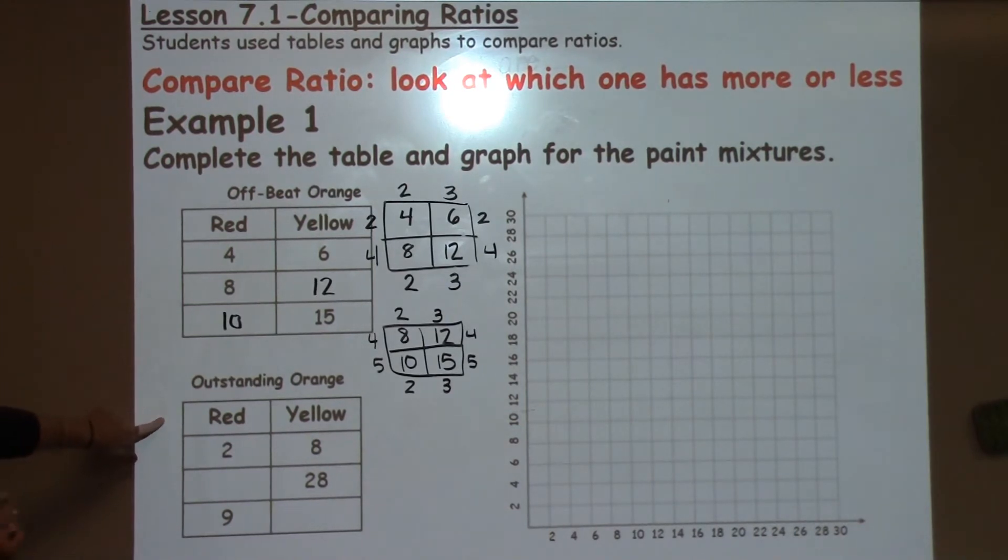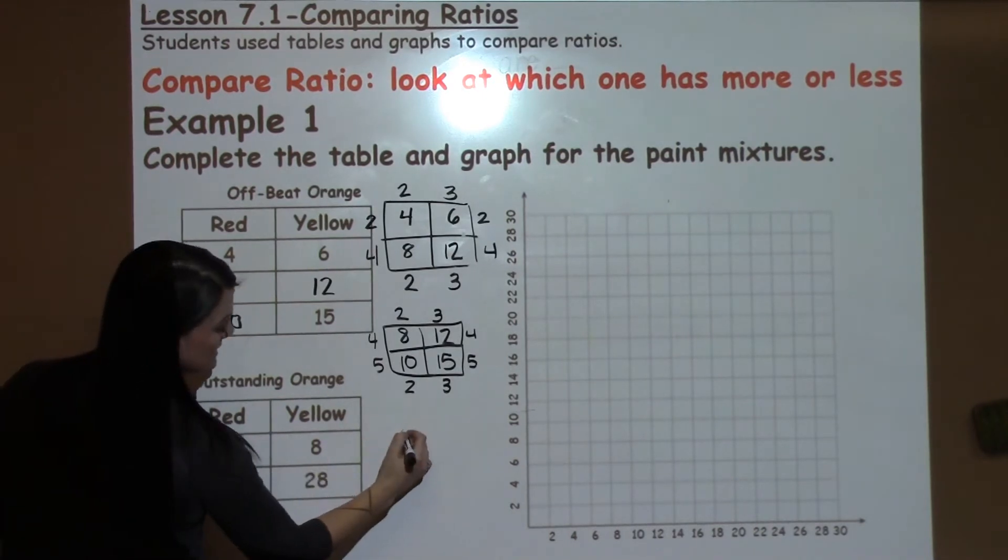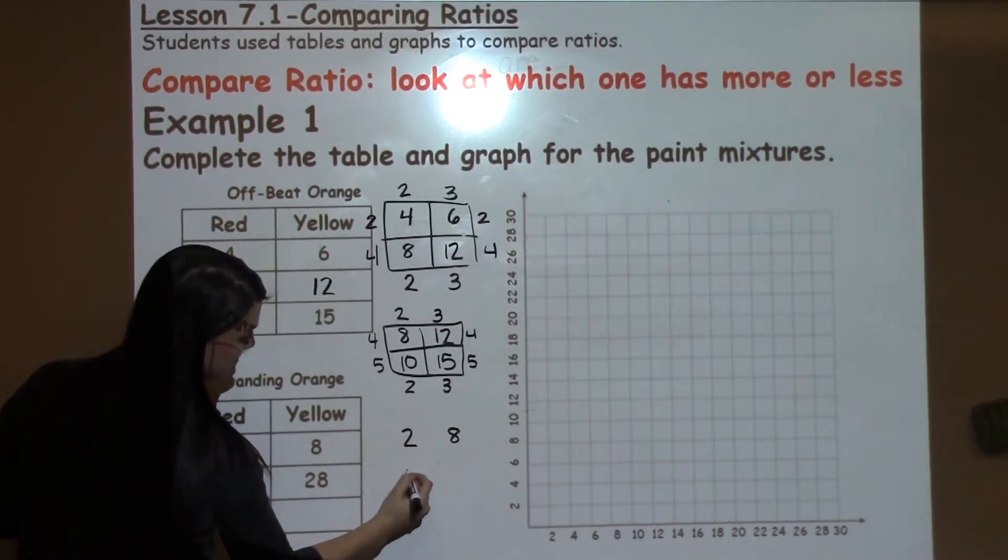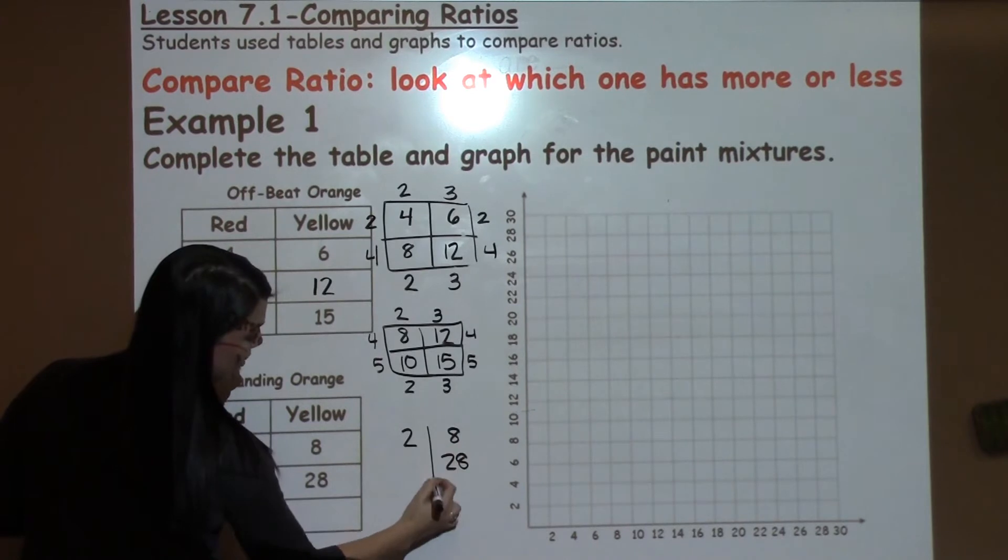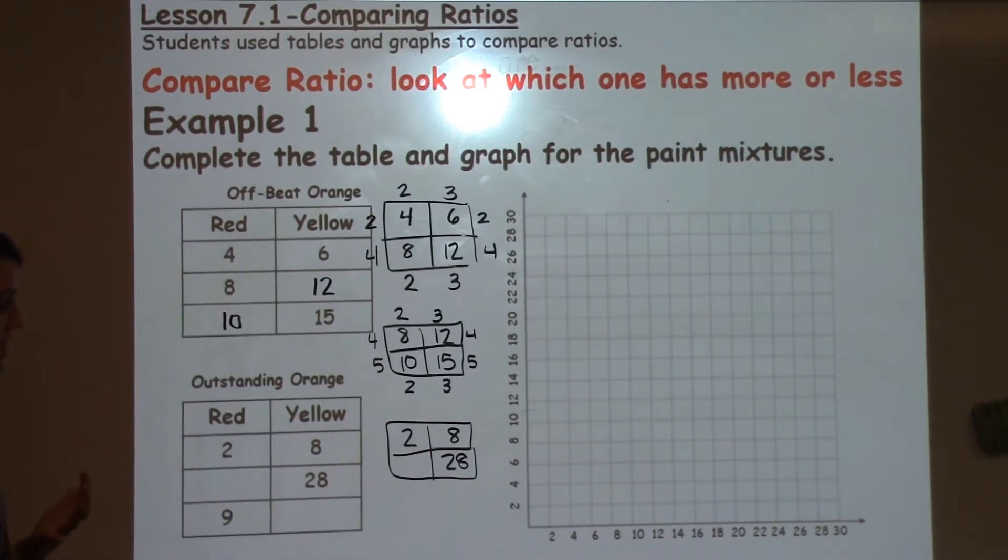And then the next table, I'm going to do the same sort of strategy where I've got 2, 8, then something, and 28. I'm going to create a factor puzzle, and I'm going to pull out numbers that I know they have in common.